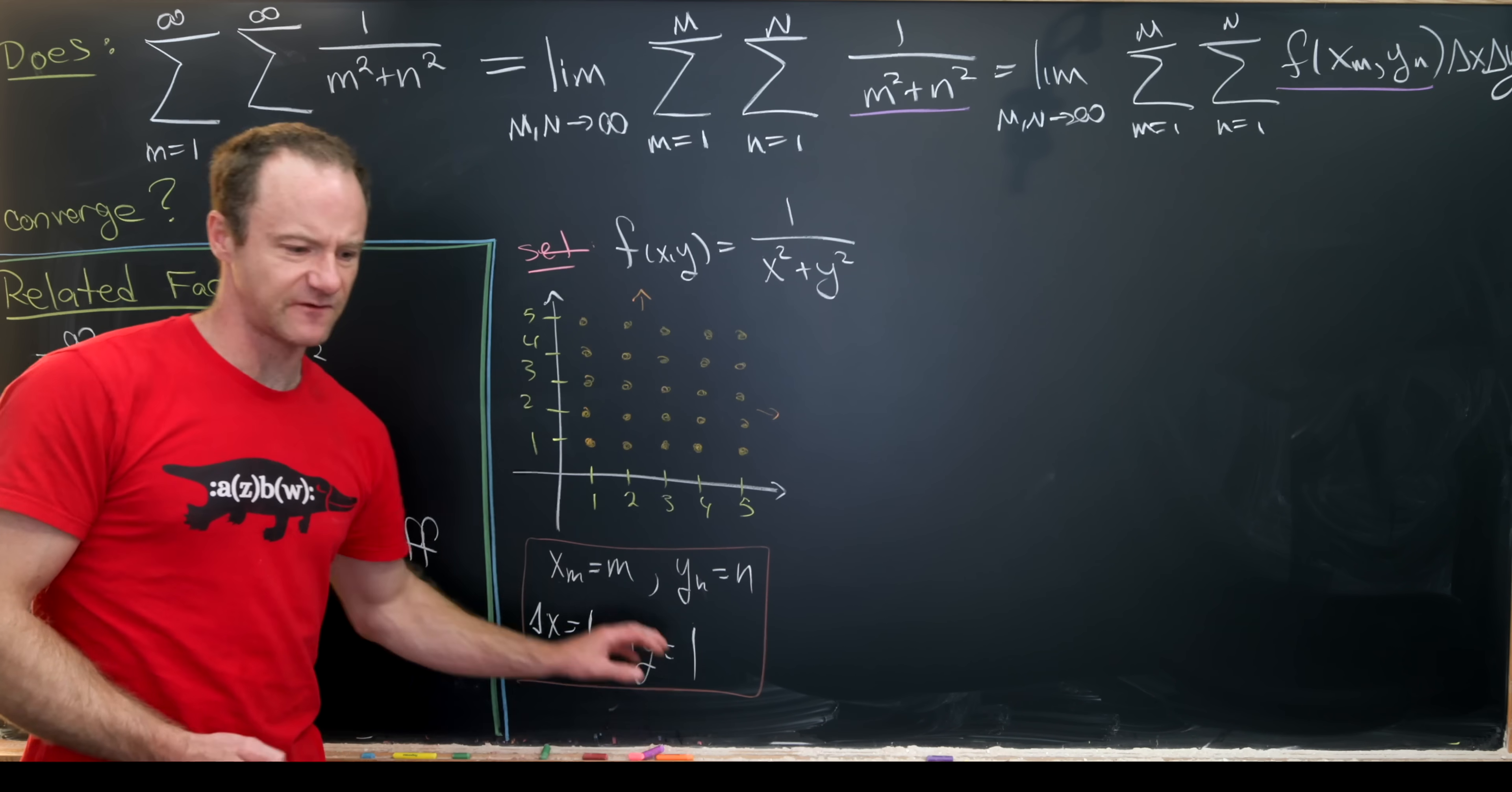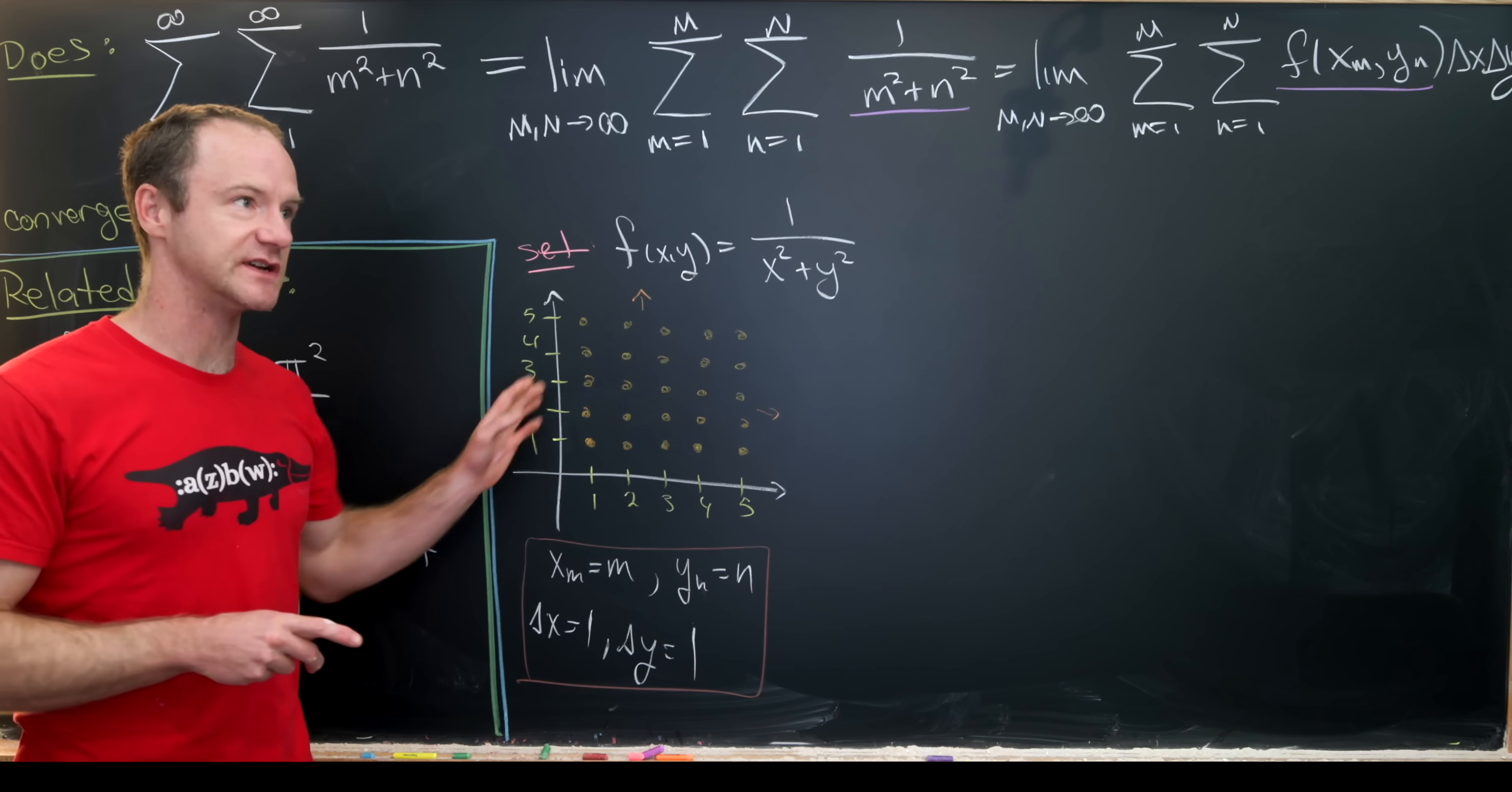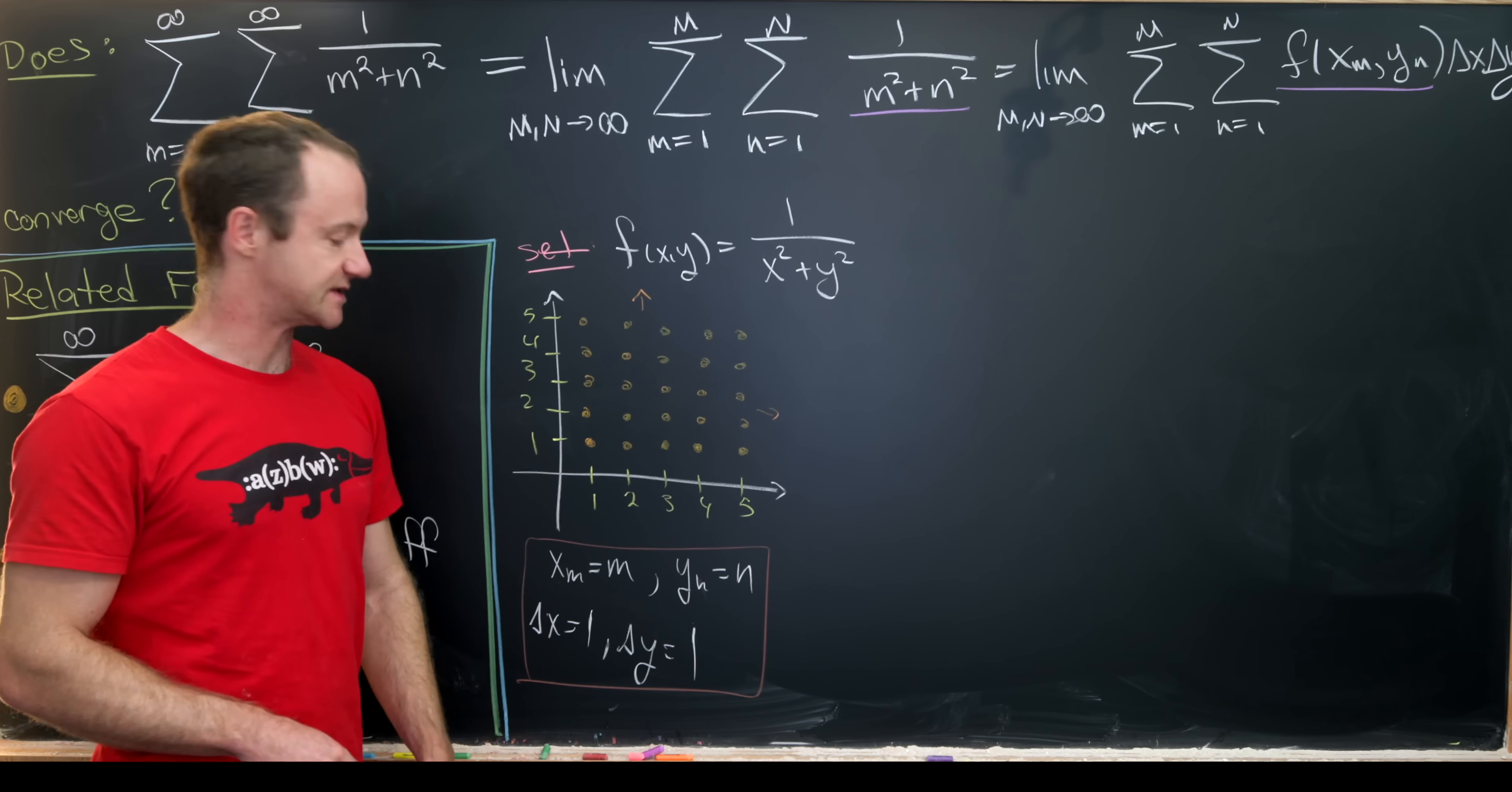Now we're going to use the fact that this is a decreasing function. You might say, well what does it really mean to be a decreasing function if your domain is two-dimensional? And I will admit that that's a little bit sketchy. We have to talk about decreasing along which direction. Well, notice as we go in this direction, this direction, that direction, anywhere radially from the origin, the value of this function decreases.